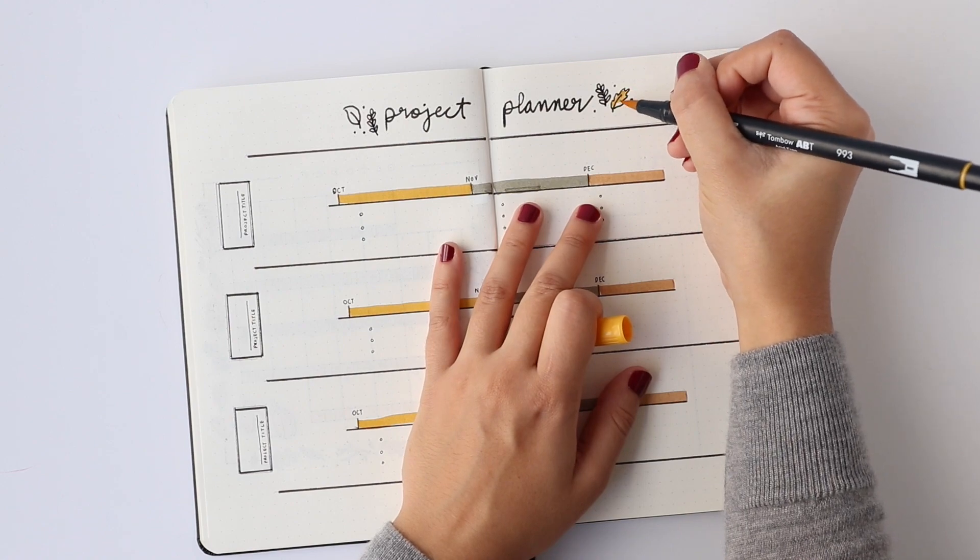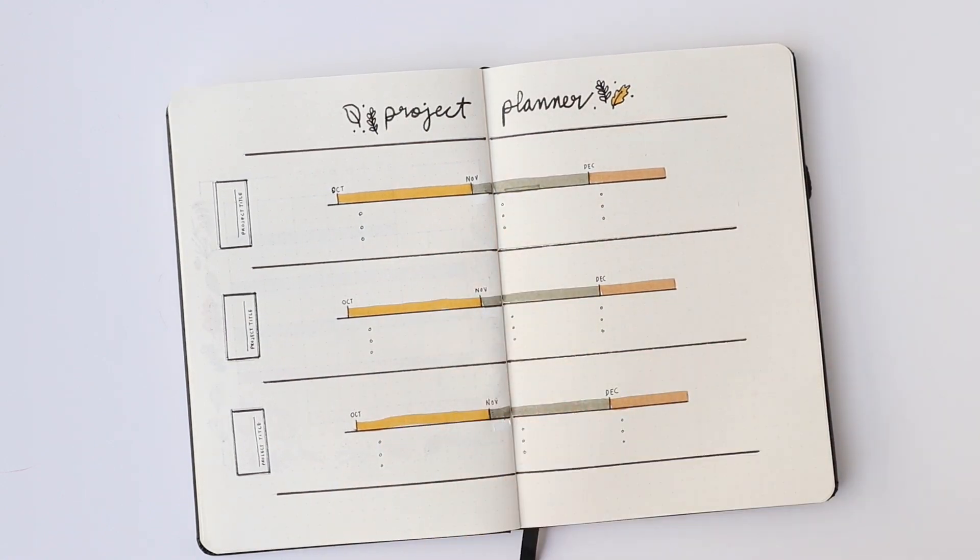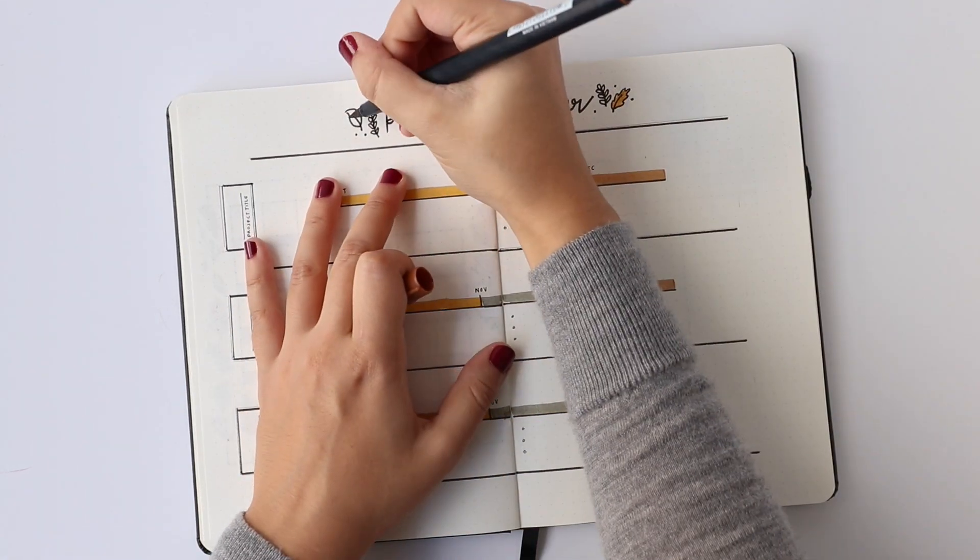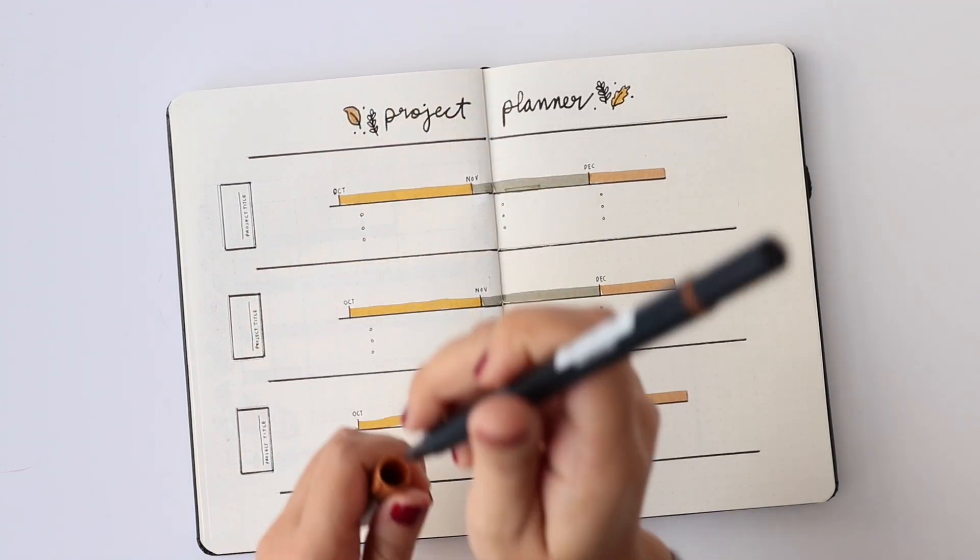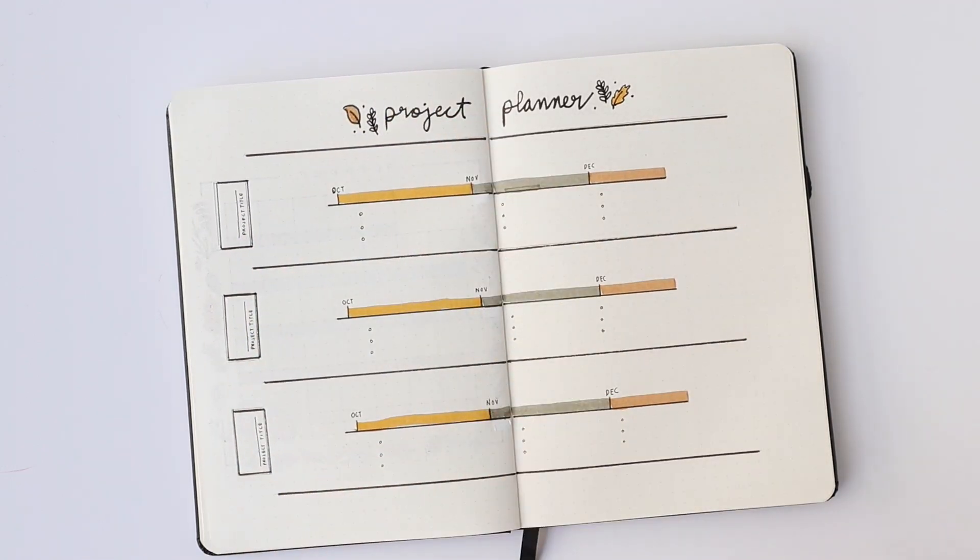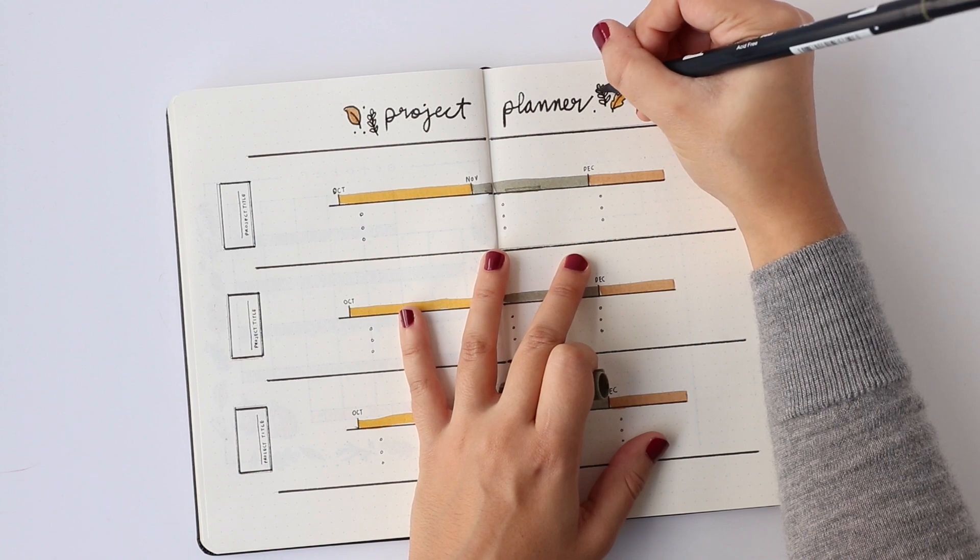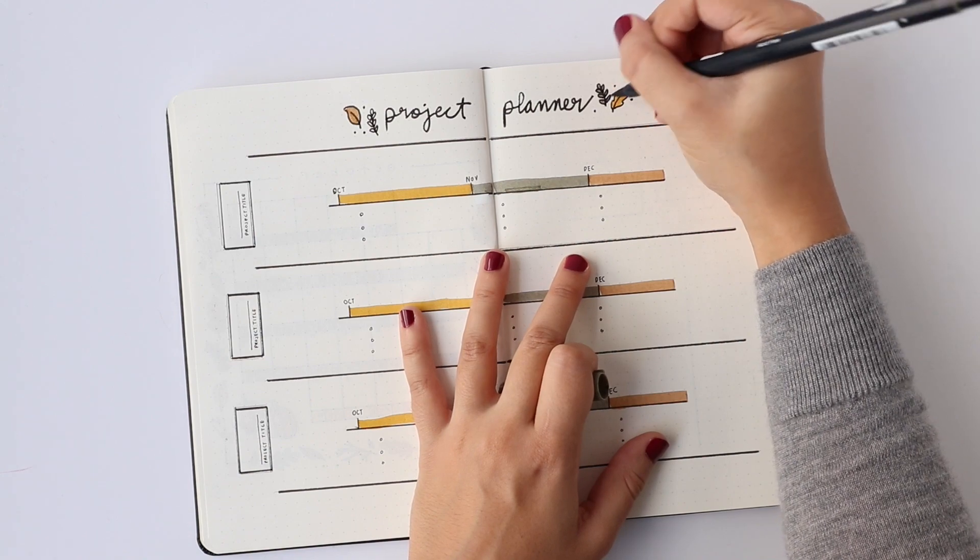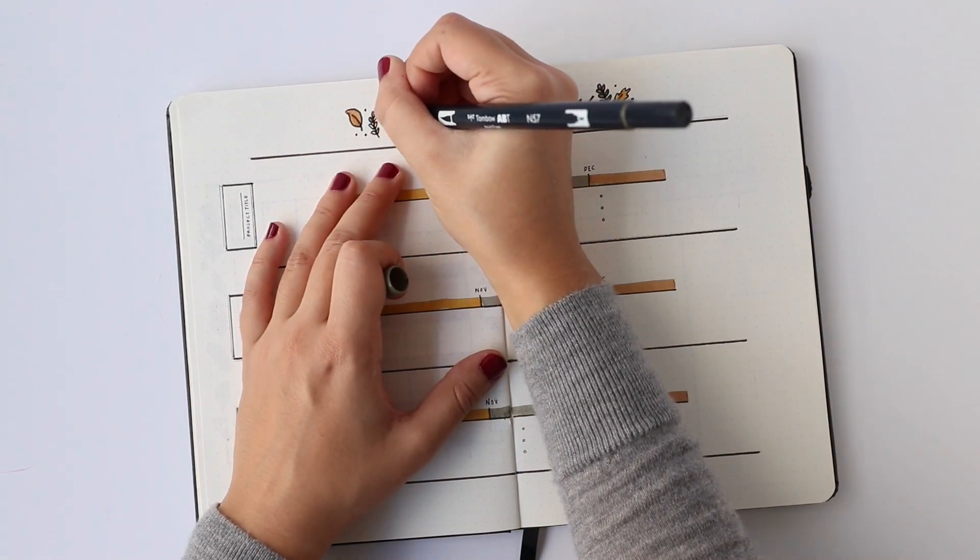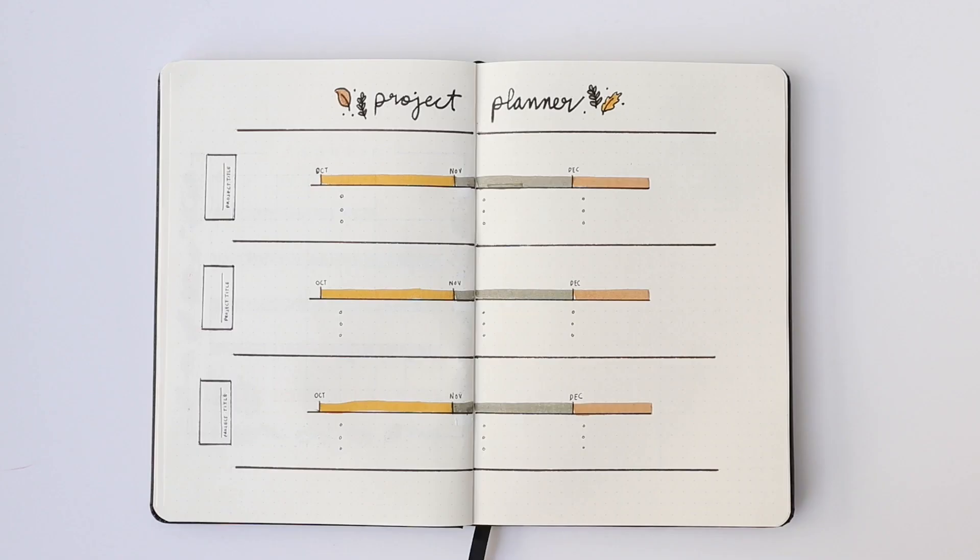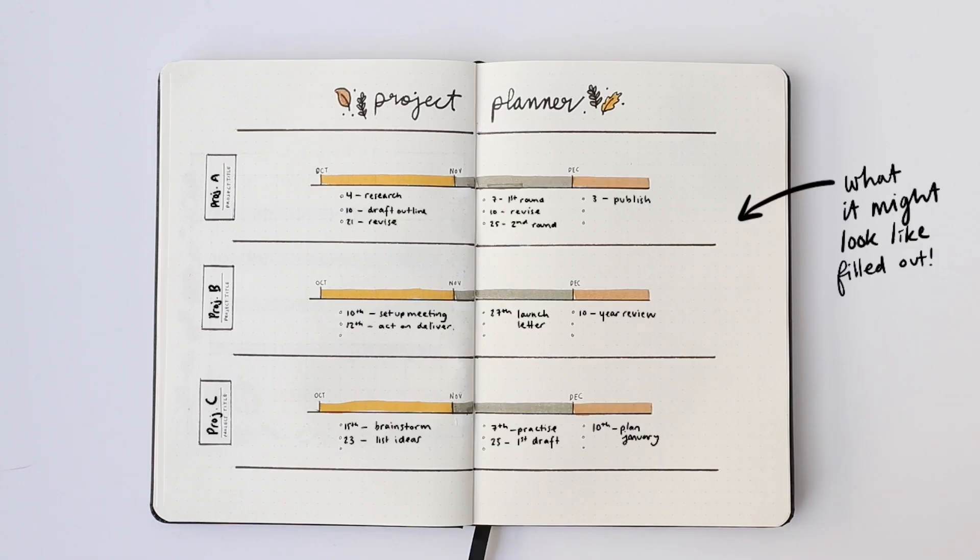Basically how this one works is each project has a timeline for October, November, and December, and below that I can write down for each project some of the main things I want to get accomplished. I'll also write due dates for those items so that I have a really specific plan, because whenever you're trying to accomplish a goal, the more specific you can be, the greater the chance that you're going to succeed and go through with it.